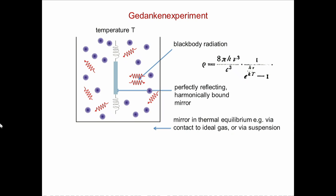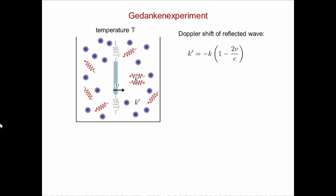In addition to that gas of photons, there should also be an ideal gas, which keeps the mirror in thermal equilibrium at temperature T. What Einstein then looked at was the reflection of photons off that mirror. So this mirror, at some instant of time, will be moving with a velocity V in one direction, and then there will be photons impinging on that mirror and being reflected. Due to the Doppler shift, the reflected photons will have a different wave number k-prime, which is given by this formula. This factor, proportional to the velocity, is simply due to the Doppler shift.